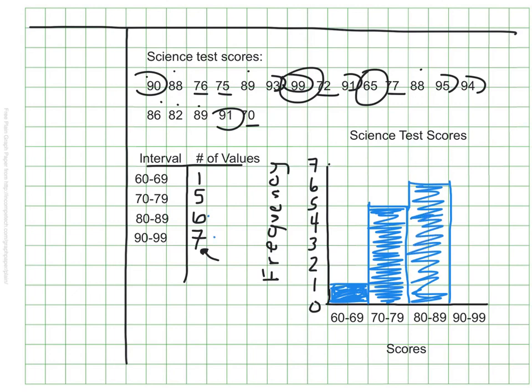And lastly, from the 90 to 99 range, there were 7 kids who made those scores. So I'm going to go ahead and mark that in as well. And that's a complete histogram.